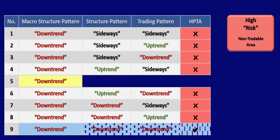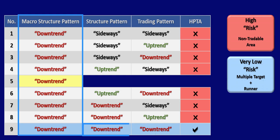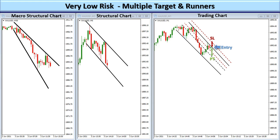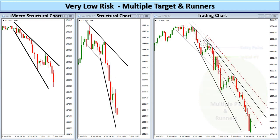Also under the very low risk category, the macro structure chart pattern could be a downtrend and the structural and trading charts also show downtrend patterns. The potential to reach larger gains increases significantly and you could adapt to an exit strategy that allows you to set multiple targets and have runners. You may see more high probability trading areas and have opportunities to add to contracts.